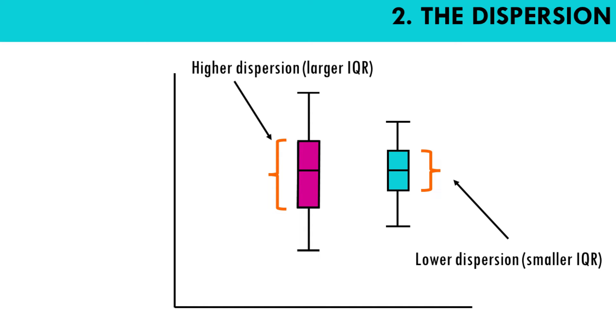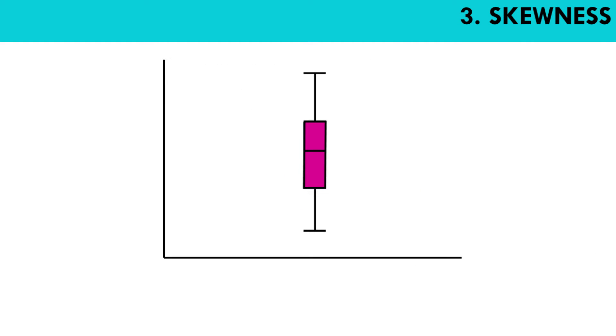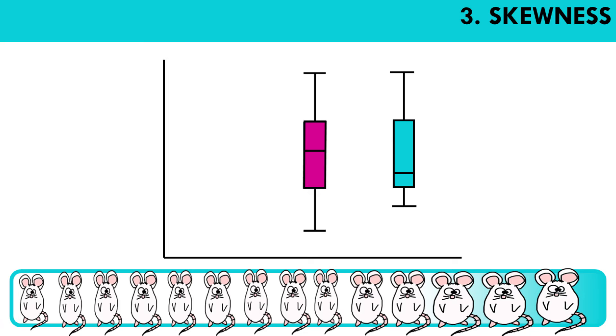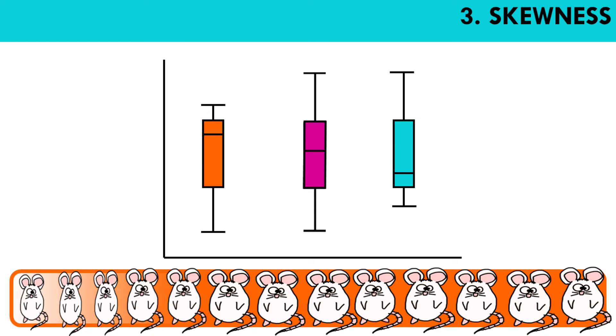With a box plot, we can also check for signs of skewness, which basically checks if the data is symmetrical, or if most values are concentrated towards either end. When the median is in the middle of the box and the whiskers are about the same on both sides of the box, then the distribution is symmetric. When the median is closer to the bottom of the box and the whisker is shorter on the lower end of the box, then the distribution is positively skewed. So it's skewed right. And when the median is closer to the top of the box, and if the whisker is shorter on the upper end of the box, then the distribution is negatively skewed or skewed left.